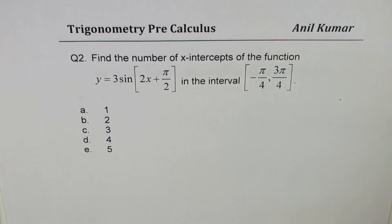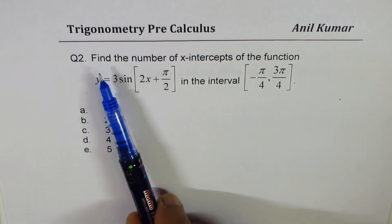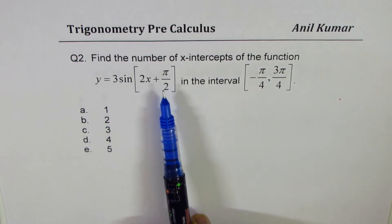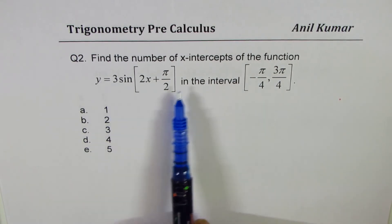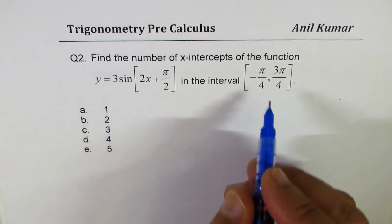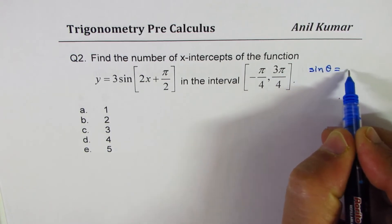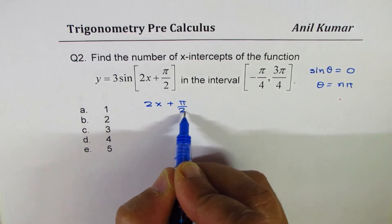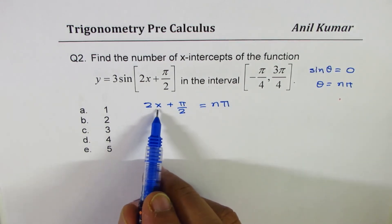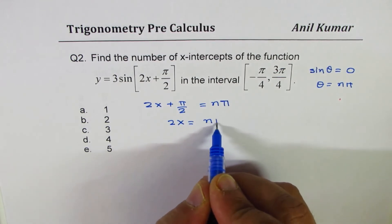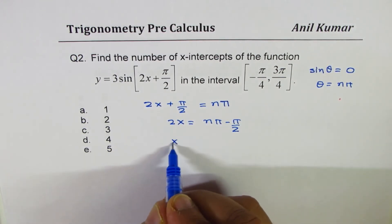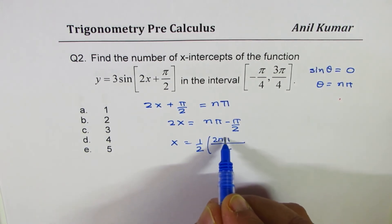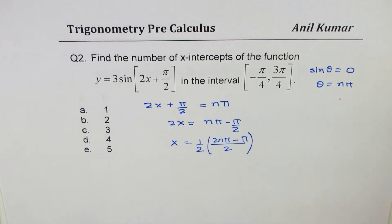Let's take up question number 2 using the algebraic method. Find the number of x-intercepts of y = 3 sin(2x + π/2) in the interval −π/4 to 3π/4. This involves a phase shift. Since sin θ = 0 when θ = nπ, we set 2x + π/2 = nπ and isolate x: 2x = nπ − π/2, so x = (2nπ − π)/4.